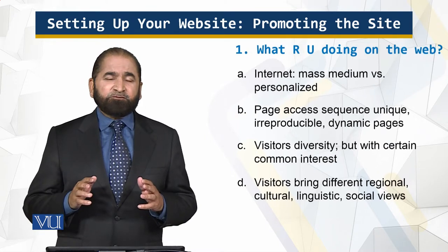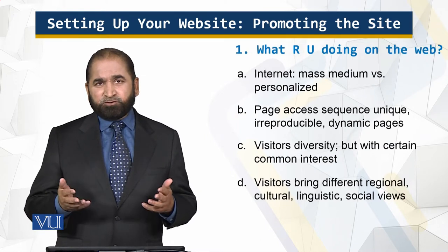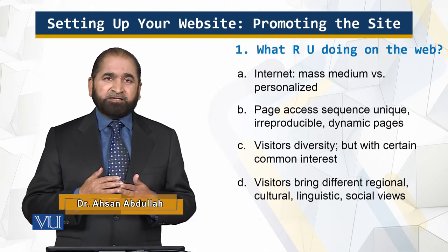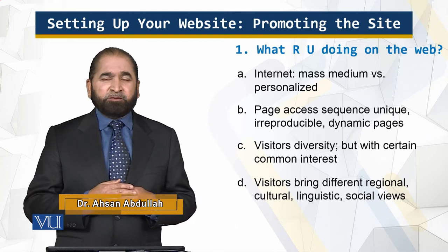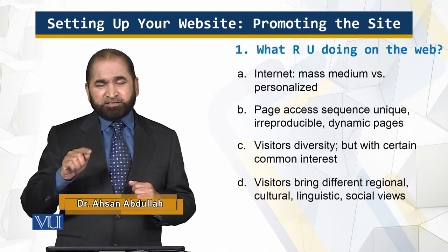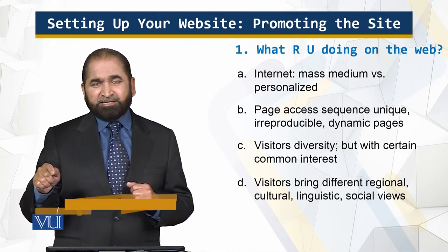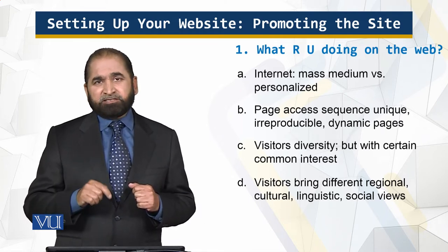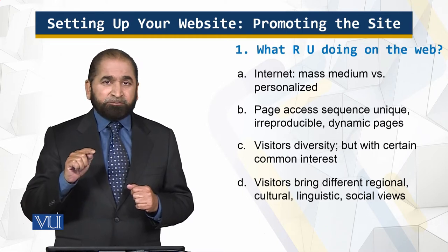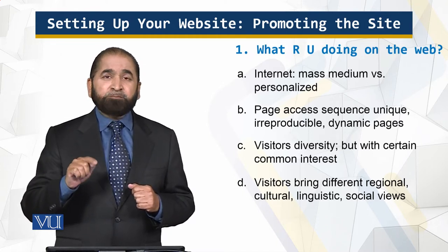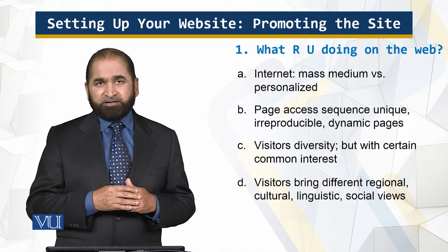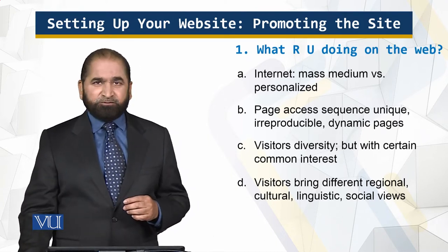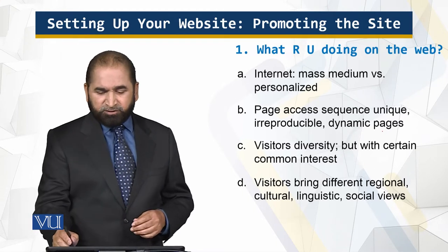The internet has millions and millions of users — it is a mass medium. But at the same time it is personalized, because the sequence in which you click on the links to reach a certain page is very personal, very personalized, and it is not reproducible. In the context of dynamic pages it is more difficult, and it is more so for dynamic people.